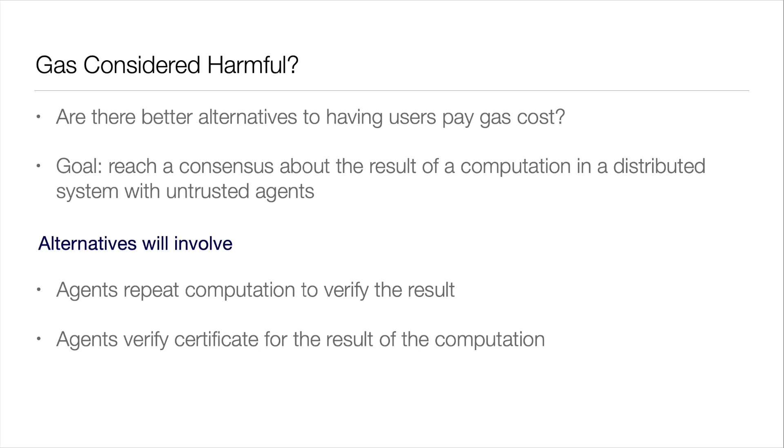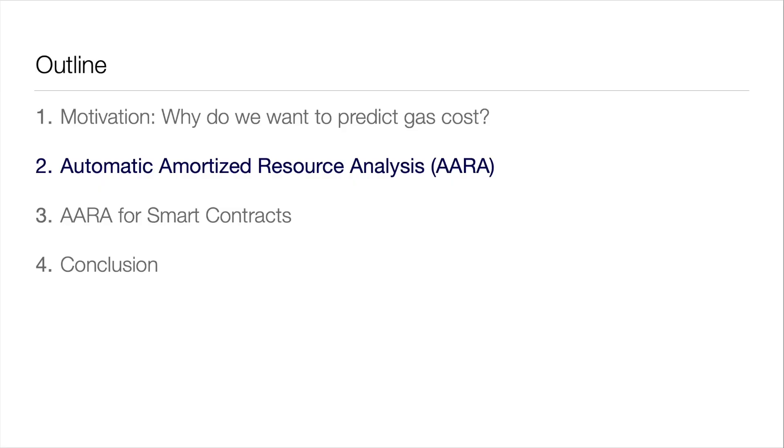If we widen the scope a little bit — maybe gas is a bad idea — but if you come up with alternatives in a distributed setting with untrusted agents, the execution cost of your contracts will play a role most likely one way or another. People have to agree on the outcome of the execution, so you either have to re-run it or come up with some kind of certificates. But even with certificates, you'll most likely run into denial of service attack scenarios. In any case, the execution cost of these contracts is important.